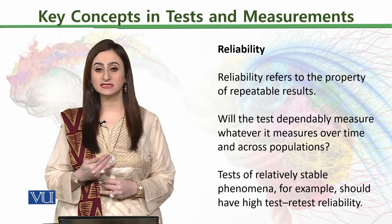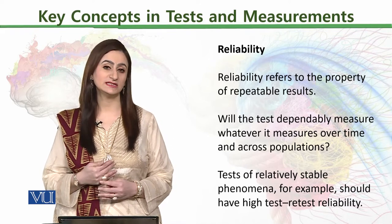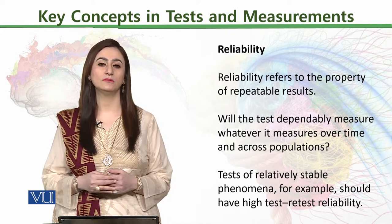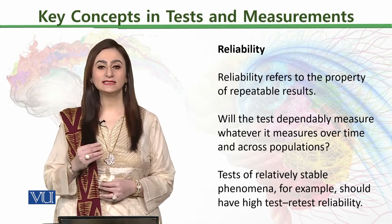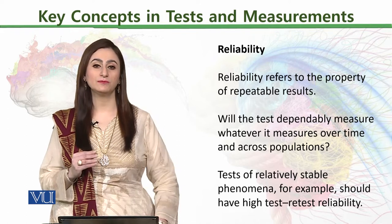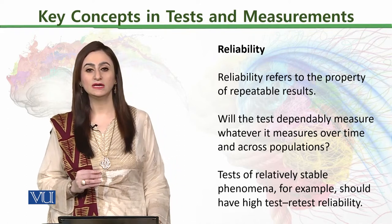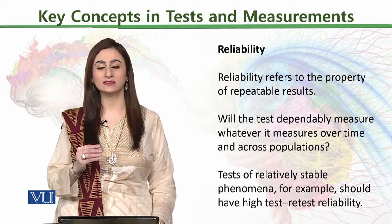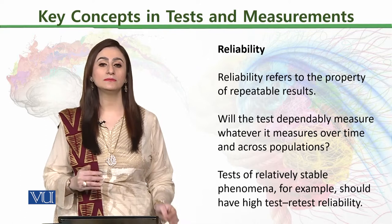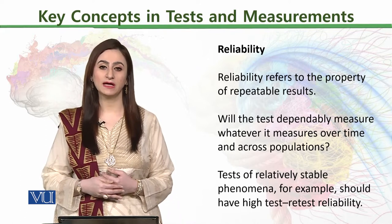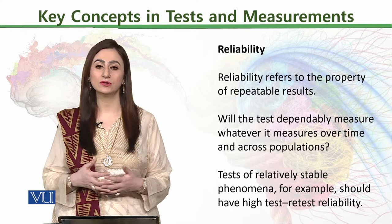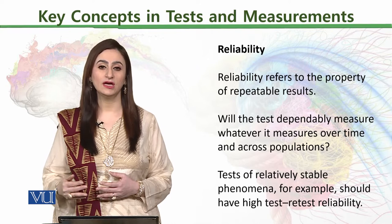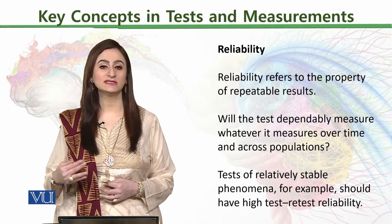Tests of relatively stable phenomena should have high test-retest reliability. If the trait we are measuring is a stable, permanent characteristic of an individual — like intelligence, which is a relatively stable measure — then no matter how many times the test is applied, the intelligence score will come out more or less the same. If an individual is intellectually low and their IQ level is below 70,